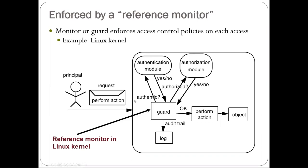The guard not only makes sure the principal is who they say they are, but after authentication it checks the policies — that's what the authorization module is about. What are the policies that mediate access by this person with this action on this object? Based on those two things, the action is either allowed or denied. You'll potentially also have an audit trail and a log, which we'll get to when we talk about forensic activity.